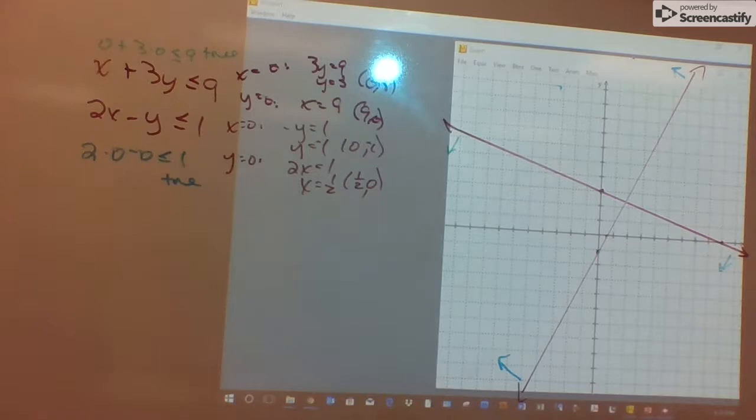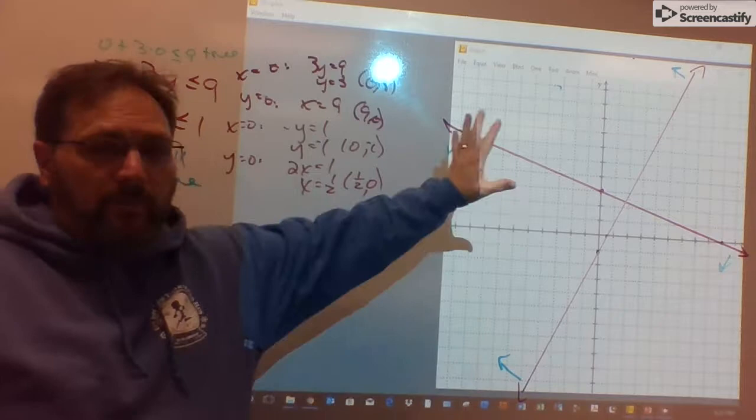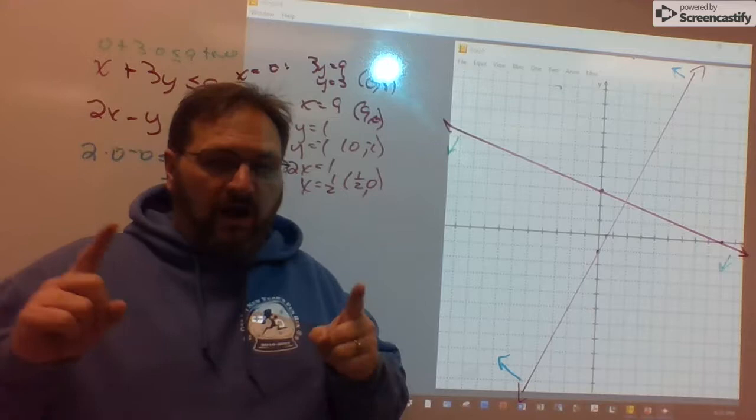Now, you'll notice now, my two boundary lines divide the plane up into four groups, four regions. One of the four regions gets shaded both times.